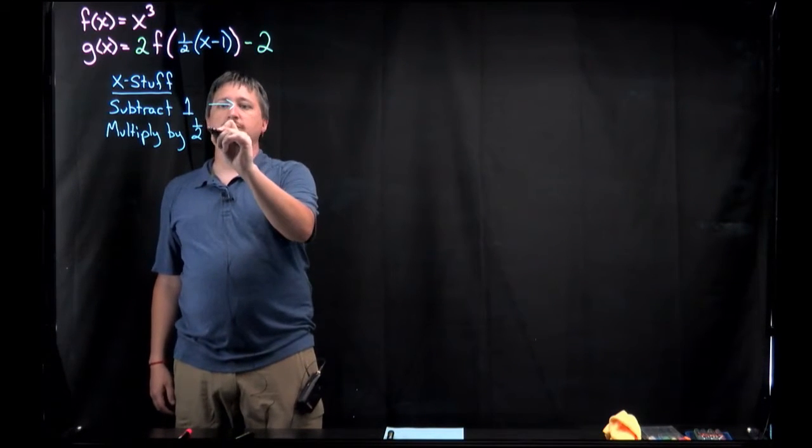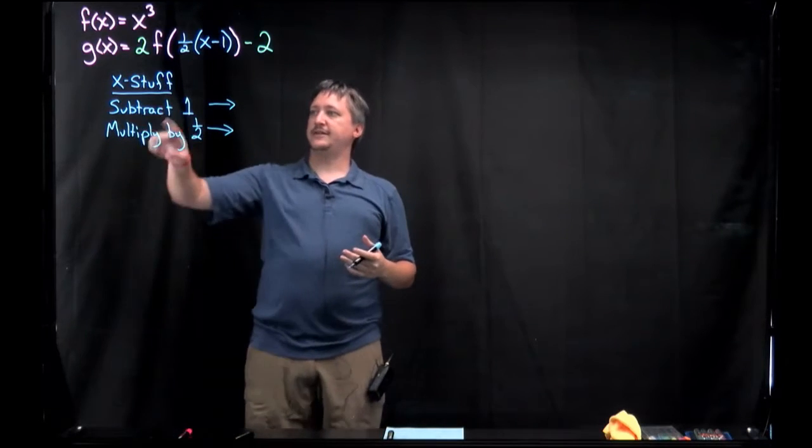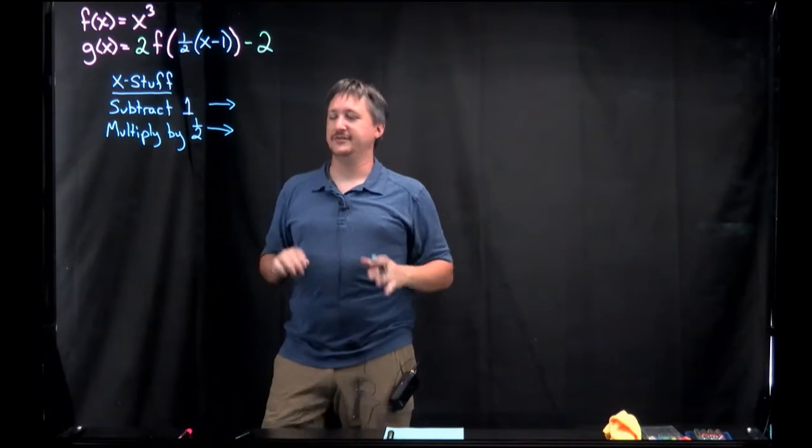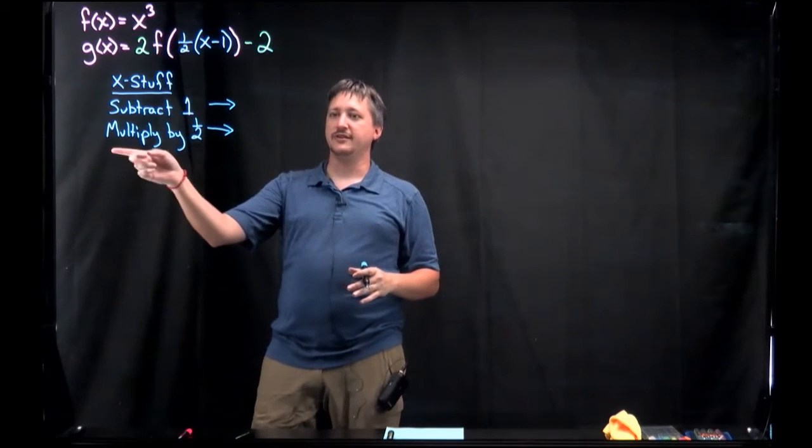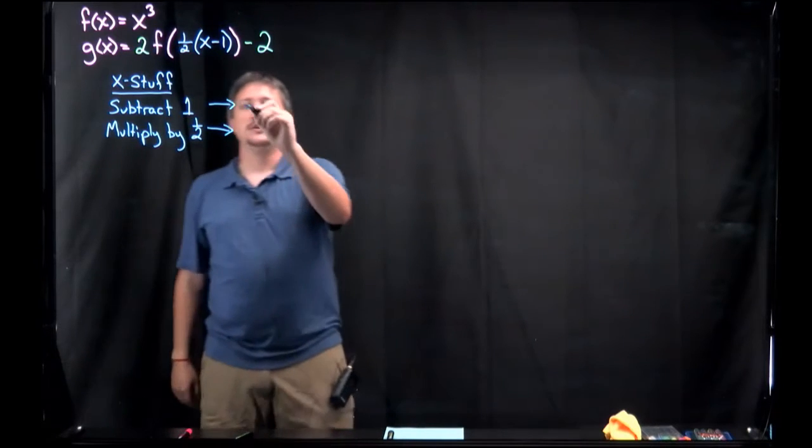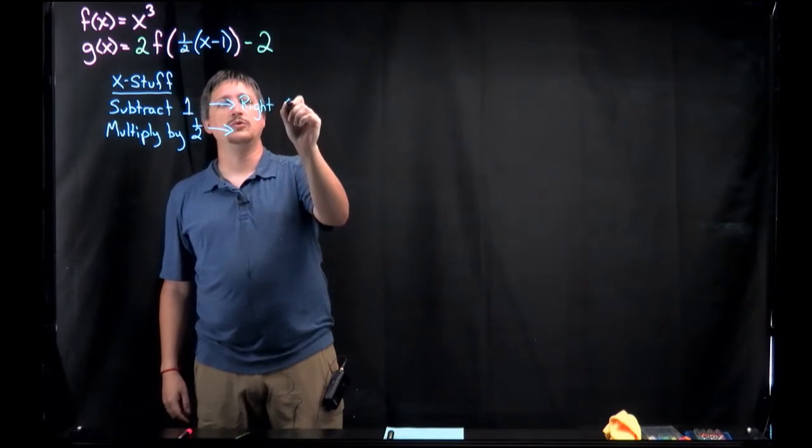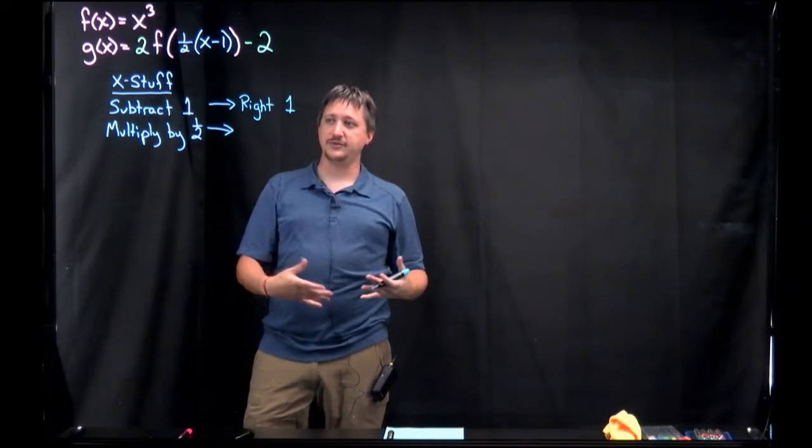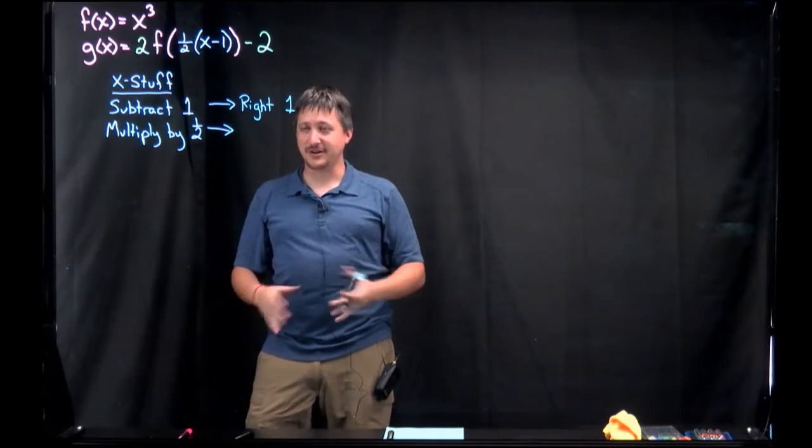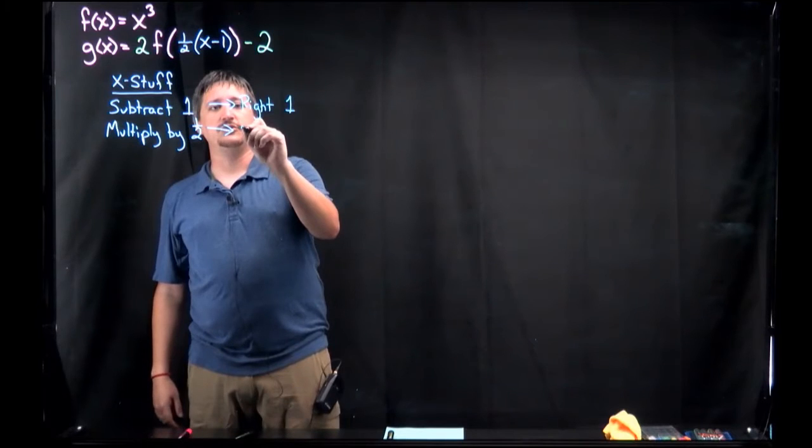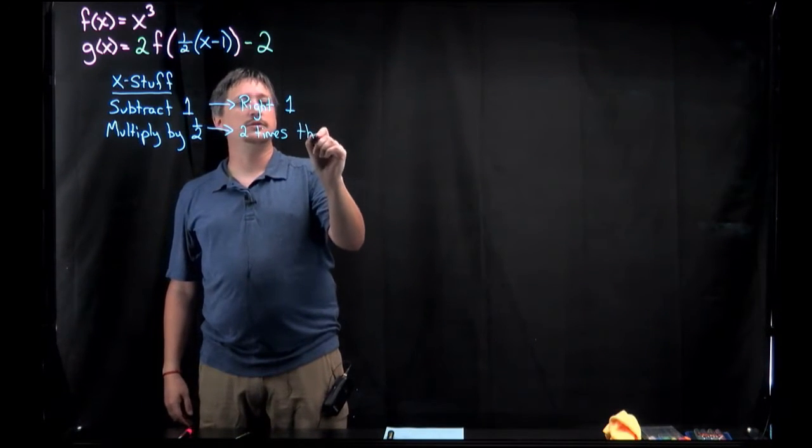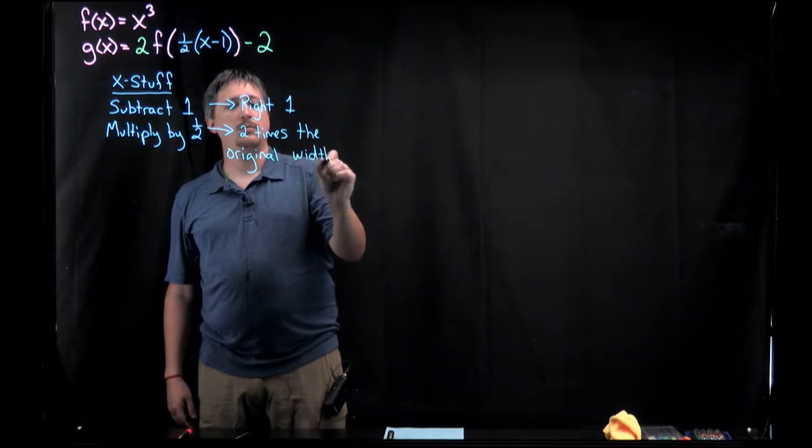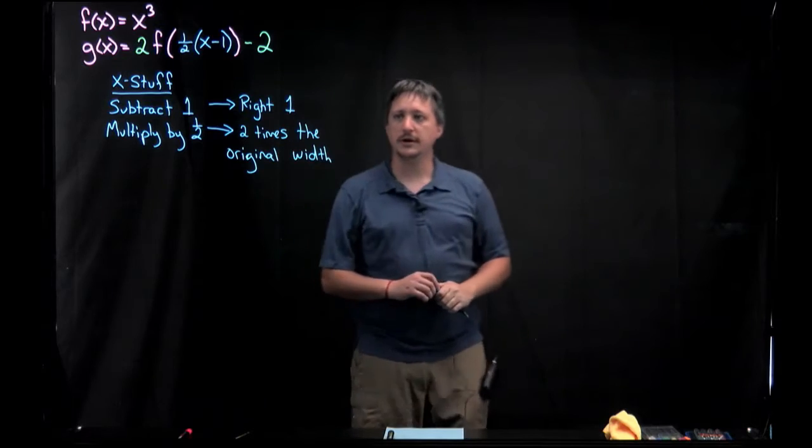And then I'm going to write out what these things are doing in terms of our translations and transformations. Remember, x stuff, everything about x is backwards. That's just this recurring theme. If you're going to remember one mantra, everything about x is backwards. So if I subtract 1, you'd think that would move it to the left 1. But because it's backwards, it's going to move it to the right 1 unit. Similarly, multiplying by 1 half, you'd think multiplying by a smaller number would make it smaller, so you'd think it would be half of the width, but everything about x is backwards. So it's actually going to be 2 times the original width.